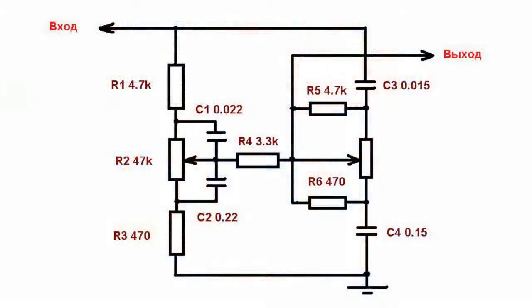One example of passive tone control is the classical variant of the scheme developed by a British engineer, which became the most common frequency equalizer in amplification equipment. The circuit consists of two links of the first order forming a bridge: low frequency — R1, C1, R3, C2, R2 — and high frequency — C3,